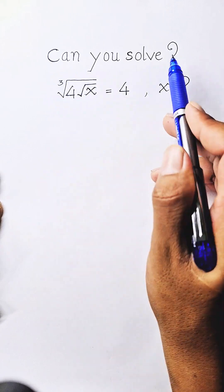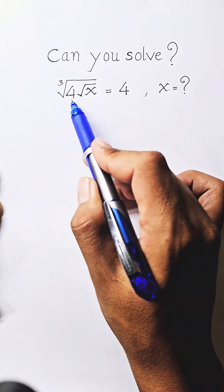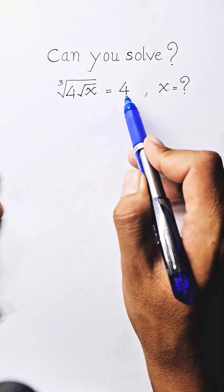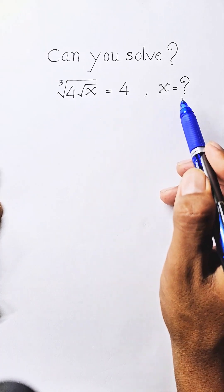Can you solve: cube root of 4 times square root of 8, equals 4? Find the value of 8.